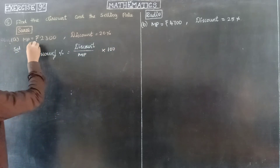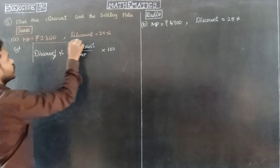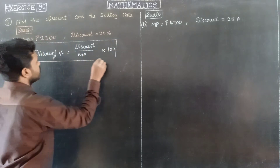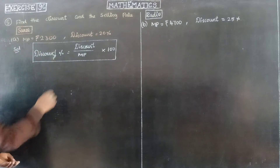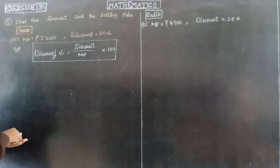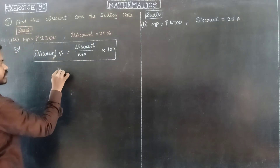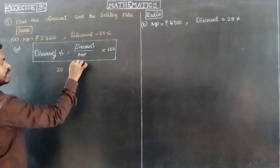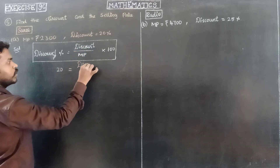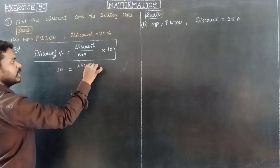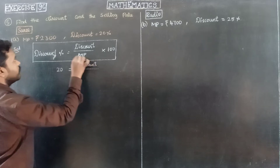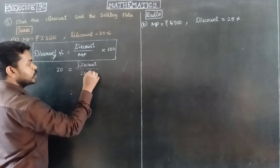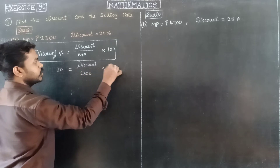So, the formula is: discount percentage is equal to discount divided by marked price, into 100. So discount is divided by marked price into 100. The discount percentage is 20%, so we apply: 20 is equal to discount divided by marked price 2300, into 100.